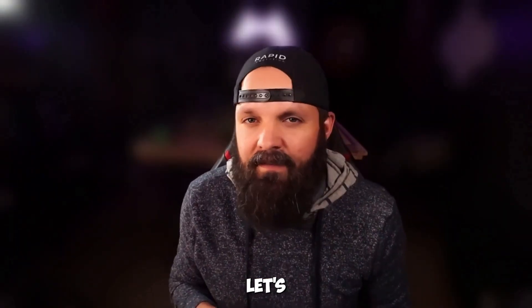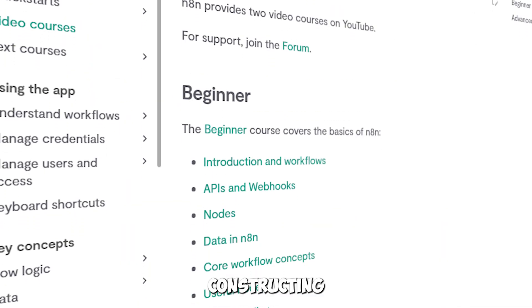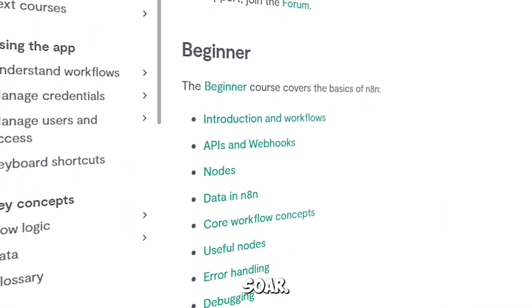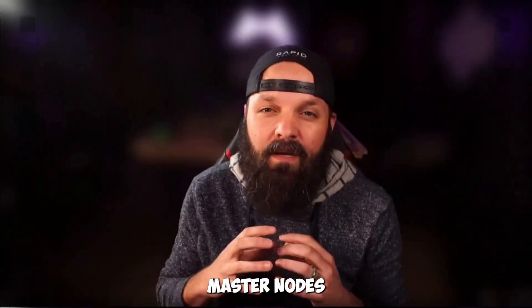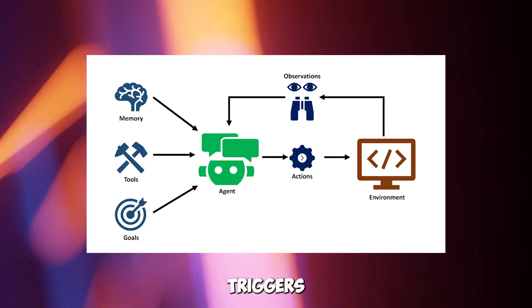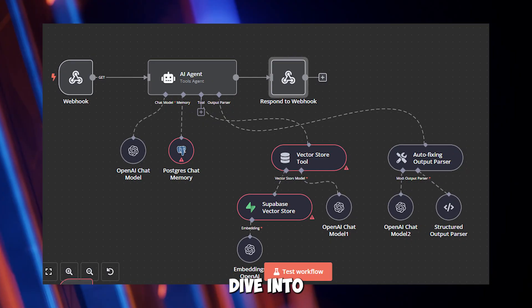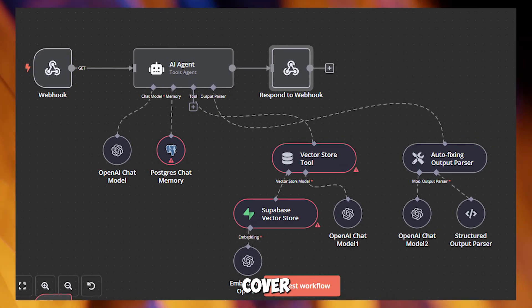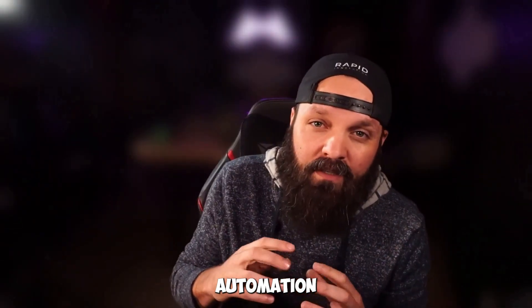Now that you're excited, let's map out how to master N8N and start building. Learning N8N is like constructing a rocket — lay the foundation, then soar. First, get comfortable with the interface, your canvas for automation. Next, master nodes, the tasks that form workflows. Then, play with triggers and actions to automate processes. Finally, dive into AI agents to add intelligence. We'll cover all this today, building a weather-to-email automation that evolves into a smart AI agent.